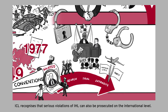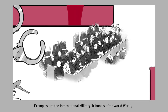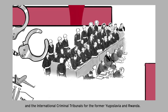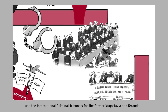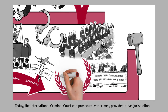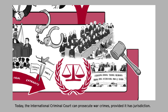ICL recognizes that serious violations of IHL can also be prosecuted on the international level. Examples include the International Military Tribunals after World War II and the International Criminal Tribunals for the former Yugoslavia and Rwanda. Today, the International Criminal Court can prosecute war crimes, provided it has jurisdiction.